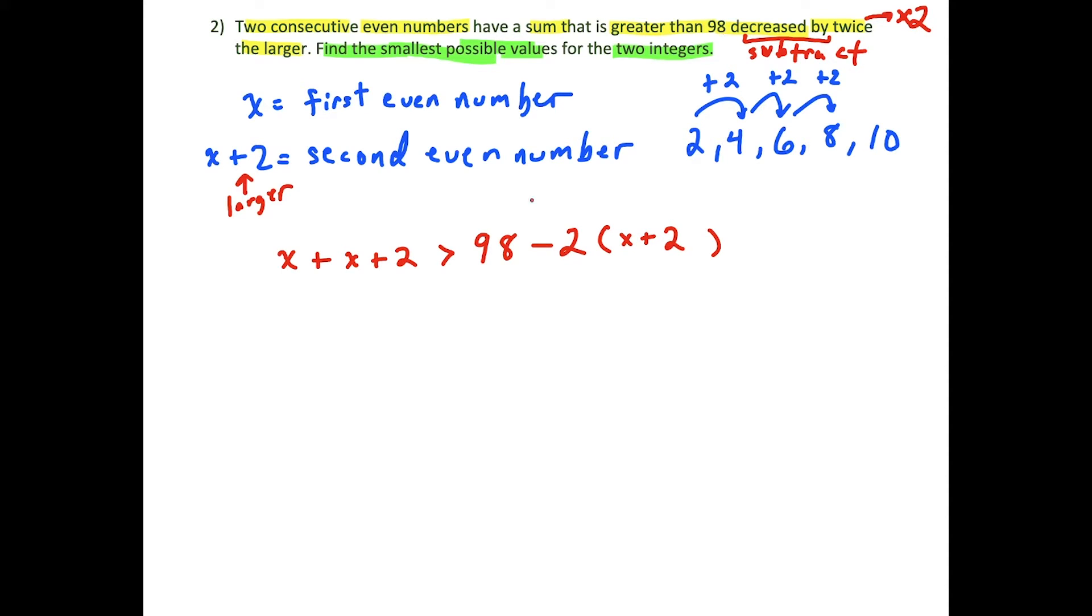All we have to do here is solve this inequality. x plus x simplifies to 2x, we have 2x plus 2 is greater than 98. We're distributing a negative, so minus 2x and then negative two times positive two is negative four. Then from here, we're going to add 2x to both sides. Now we've got 4x plus 2 is greater than 98 minus 4 is 94.